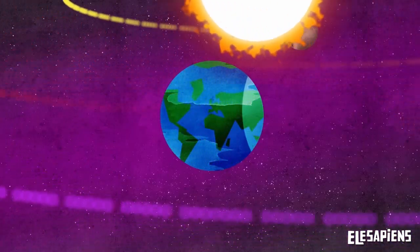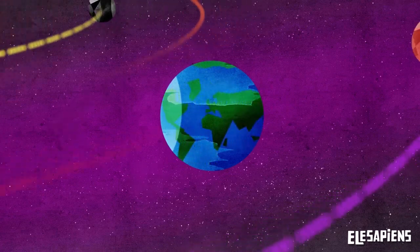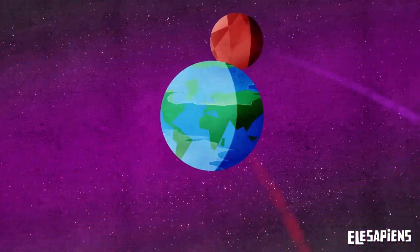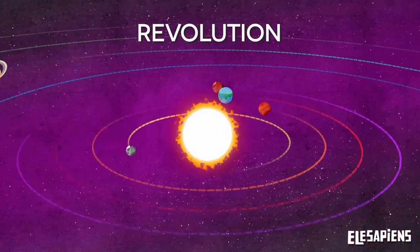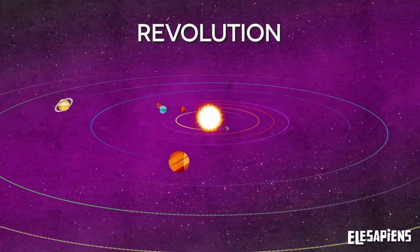In addition to rotating, our planet travels in an orbit around the sun. This movement is called revolution and occurs due to the force of gravity.